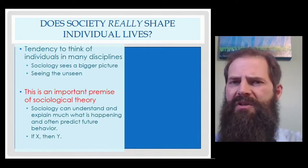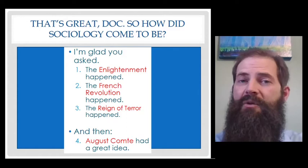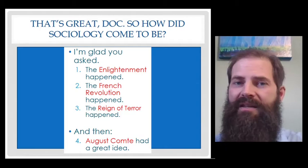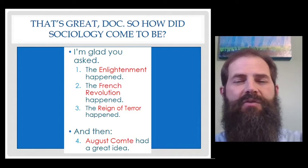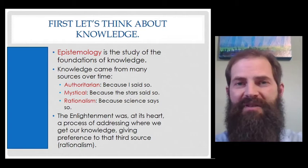Now let's start to get into the origins of sociology. Today we're going to talk about three historical events that were critical to the founding of the field of sociology. In our next lecture, we'll meet the guy who actually founded sociology, a guy by the name of Auguste Comte, who had a really great idea. But today we're going to talk about the Enlightenment, the French Revolution, and then the Reign of Terror, a small sub-component of the French Revolution, where the revolution kind of went off the wheels. Let's get started.